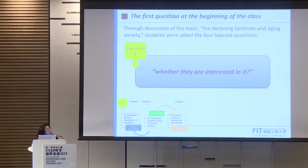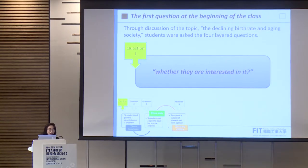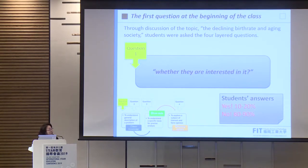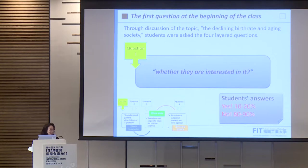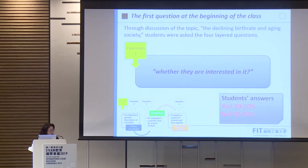The first question asks whether students are interested in the topic. This is a very important question. Through discussion of the topic — the declining birth rate and aging society — students were asked this first question. Around 10 to 20 percent said yes, while 80 to 90 percent said no. This is the present situation among Japanese college students, but they gradually changed their mind and attitude toward this topic through discussion with others.